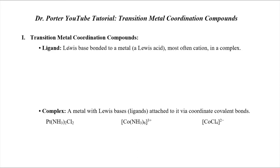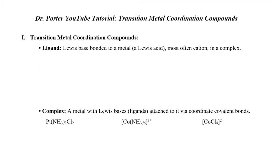I think the idea of transition metal chemistry is really simple acid-base chemistry. You've got to go back to the Lewis definition. You have metals and you have ligands. When we get into transition metal compounds, we're going to really talk about ligands and how they bind to metals. Ligands are going to be what binds to the metal, and those are going to be our Lewis bases. A Lewis base is simply an electron pair donor.